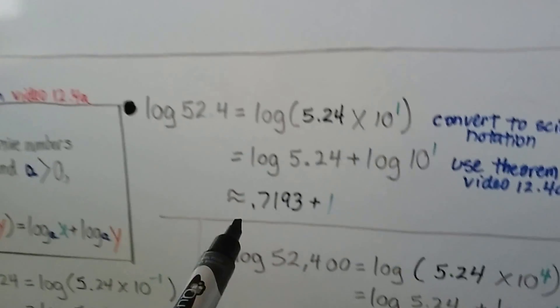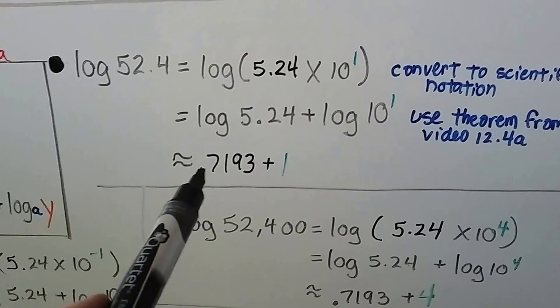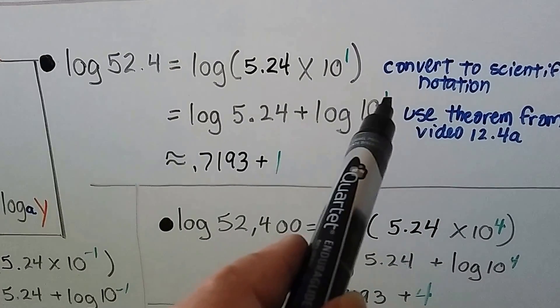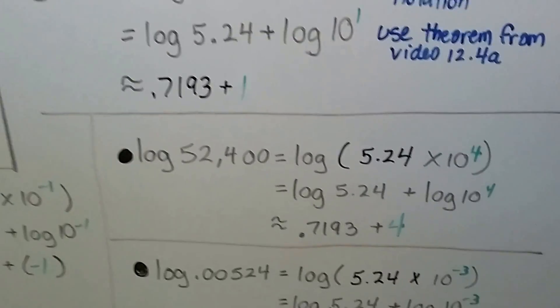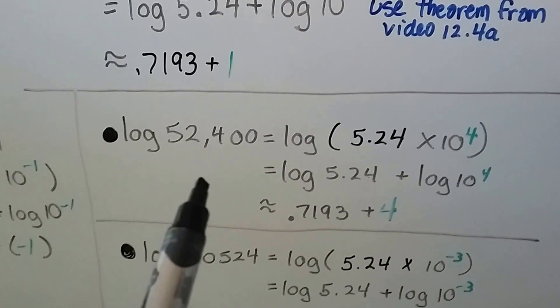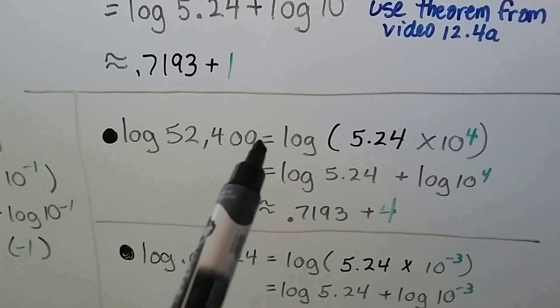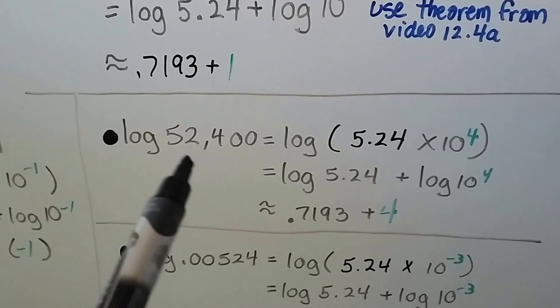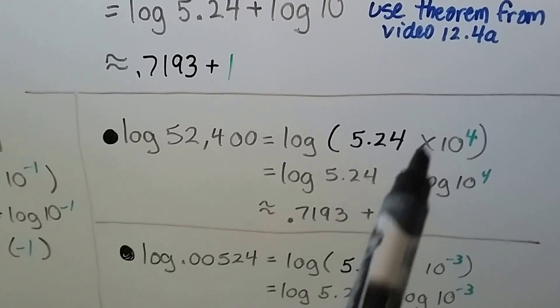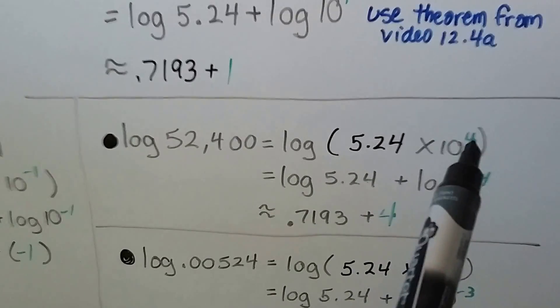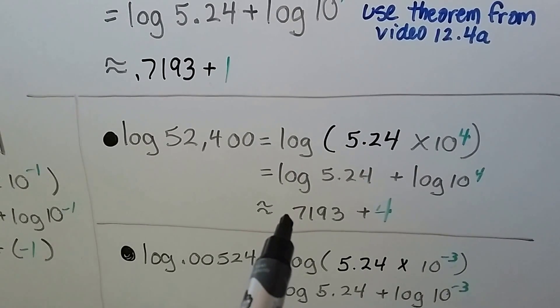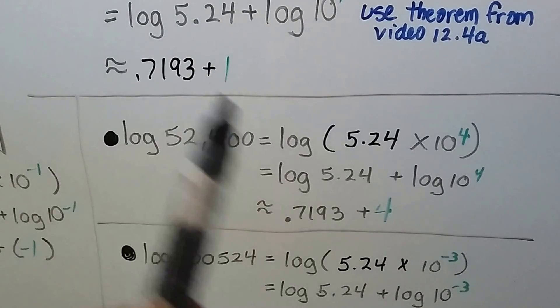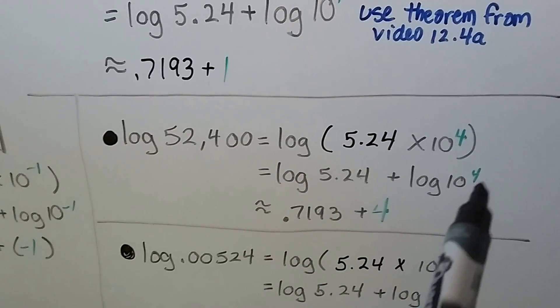That means it's approximately 0.7193 plus that 1. Whatever the exponent is, that's what the plus is. We've got 52,400. We've got to move the decimal point from back here behind this 0: 1, 2, 3, 4 hops. So that means it's going to be written as times 10 to the fourth power. When we split it up into add-ins and find its approximation, it's 0.7193 plus 4. That was the exponent.